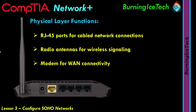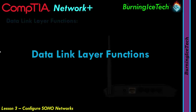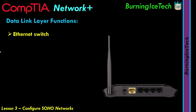Now looking at layer two — the data link layer — one function is the Ethernet switch. As covered in the OSI model video, a switch normally falls under layer two. The router can act as a switch, so if you only have two or three devices at home, there's no need for a separate switch. Your family or colleagues can connect to one another through this router because it acts like a switch.